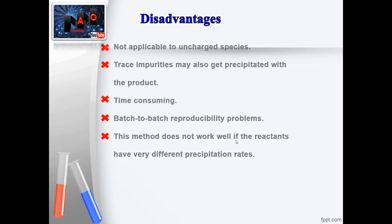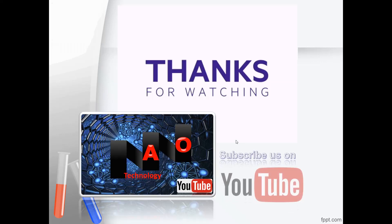Disadvantages: Co-precipitation method isn't applicable to uncharged species. Trace impurities may also get precipitated with the product. This method is time consuming and has batch-to-batch reproducibility problems. It does not work well if the reactants have very different precipitation rates.